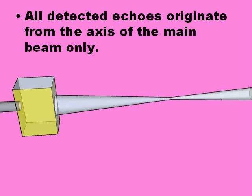A further assumption is that all echoes originate only from the axis of the beam. This is not always true, because sometimes the ultrasound transducer produces ultrasound outside the main beam, which also produces echoes.